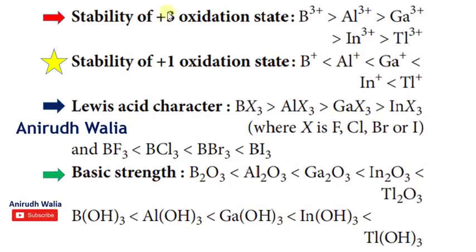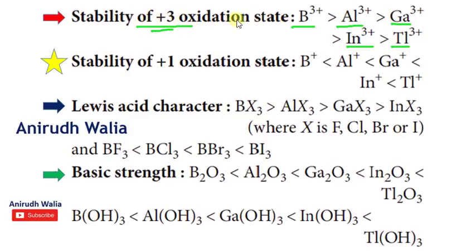There are two possible oxidation states — plus three and plus one. There are five elements in Group 13: boron, aluminium, gallium, indium, and thallium. A short trick to remember: 'Bo bangan alu gobi in thalla.' Now, the stability of the plus three oxidation state decreases as we move down the group — boron with plus three is more stable than aluminium, which is more stable than gallium.